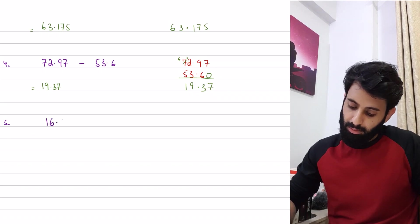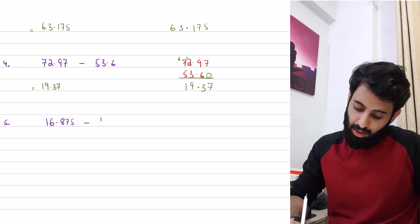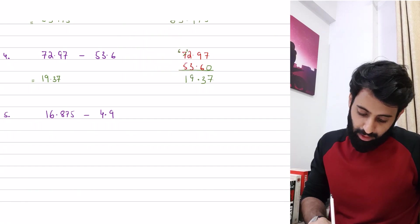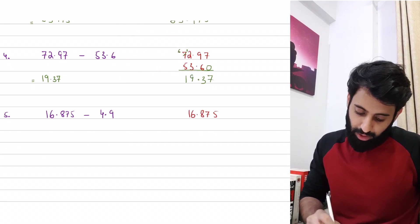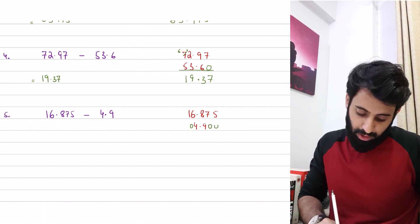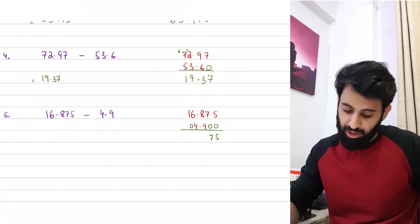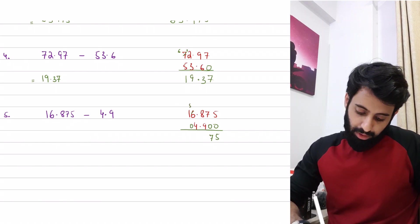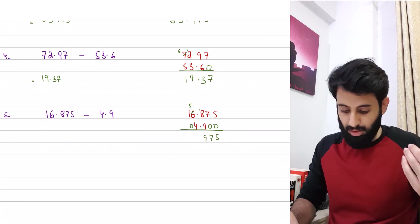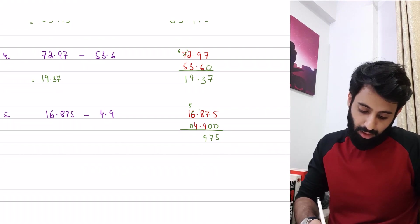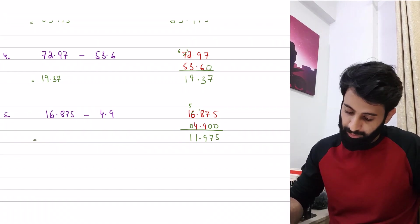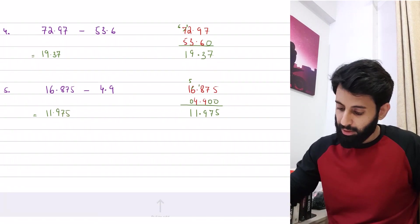Another subtraction example: 16.875 minus 4.9. Write 16.875, then 4.9 with the decimal aligned, and fill missing places with zeros. So 5 minus 0 is 5; 7 minus 0 is 7; 8 minus 9 — we can't do that, so reduce 6 to 5, give 1 to 8 making it 18; 18 minus 9 is 9; 5 minus 4 is 1; 1 minus 0 is 1. Bring the decimal straight down: the answer is 11.975.